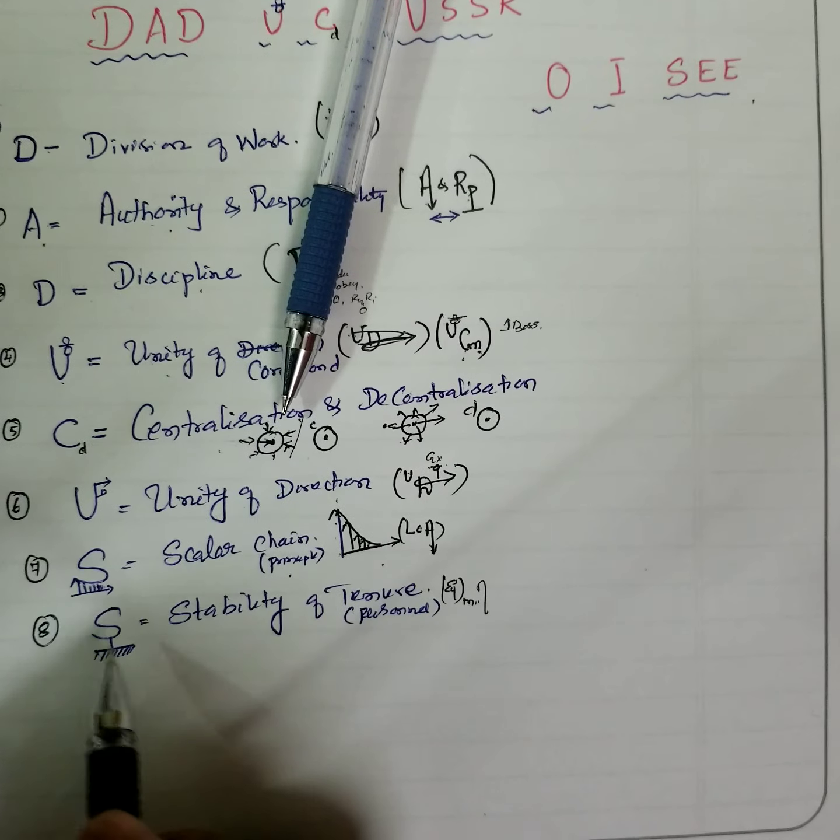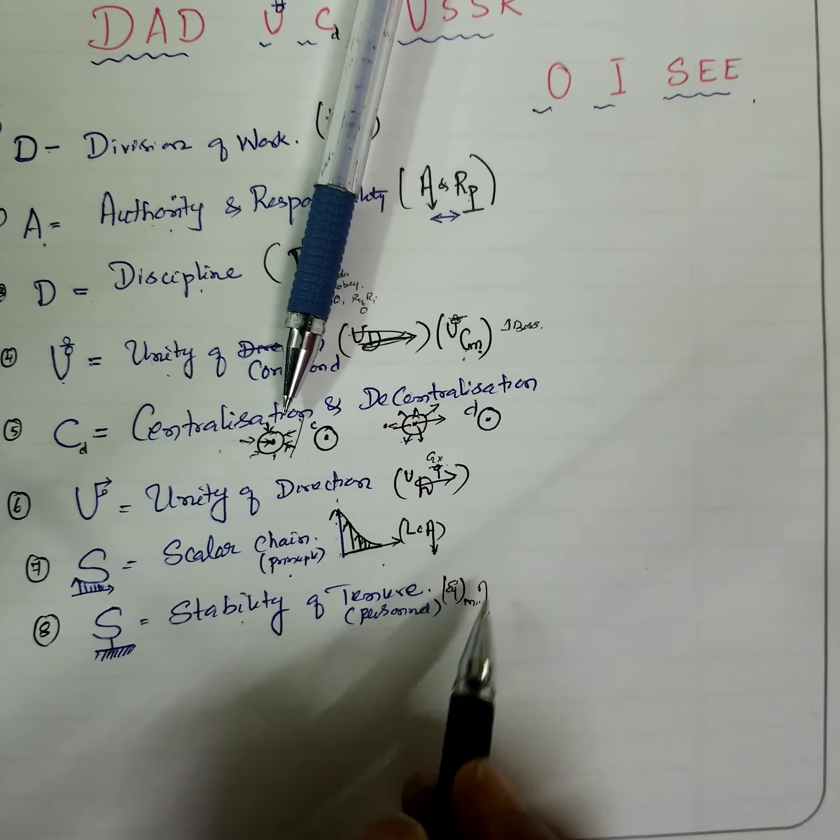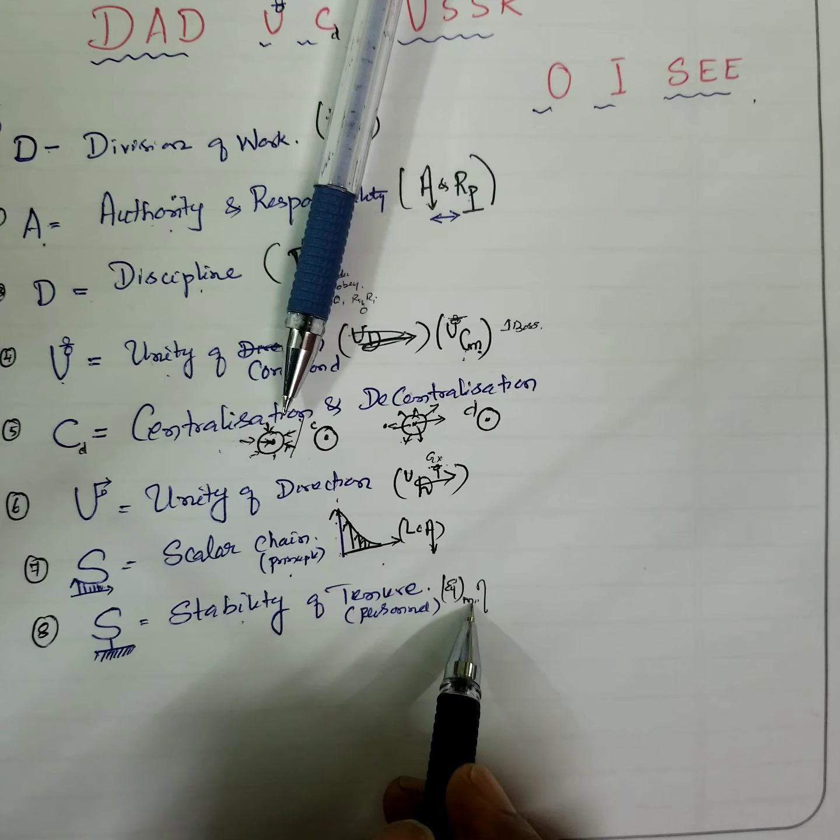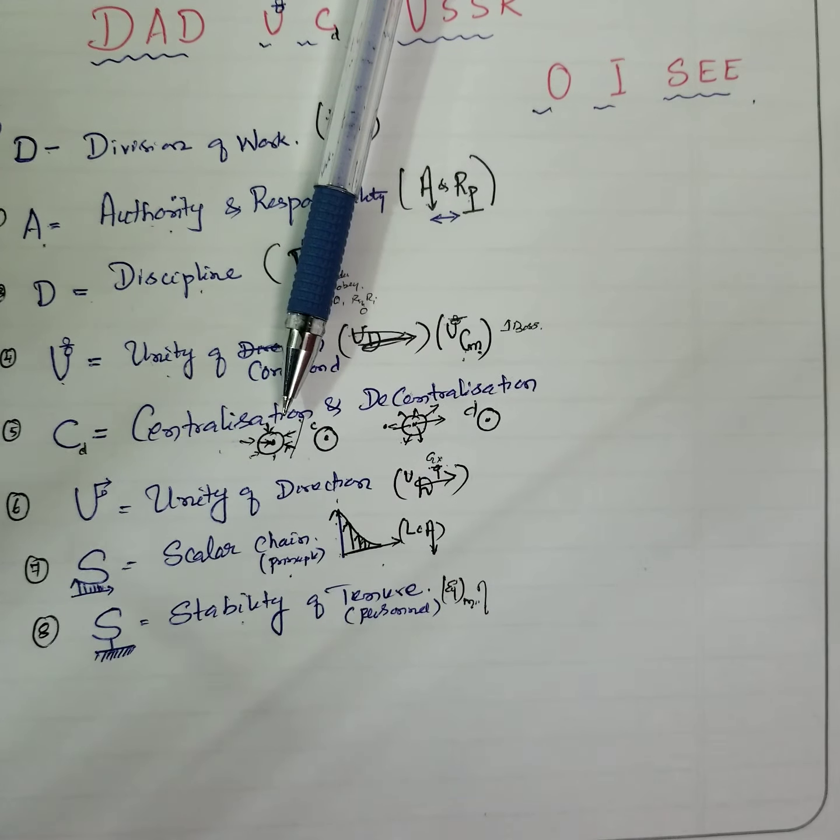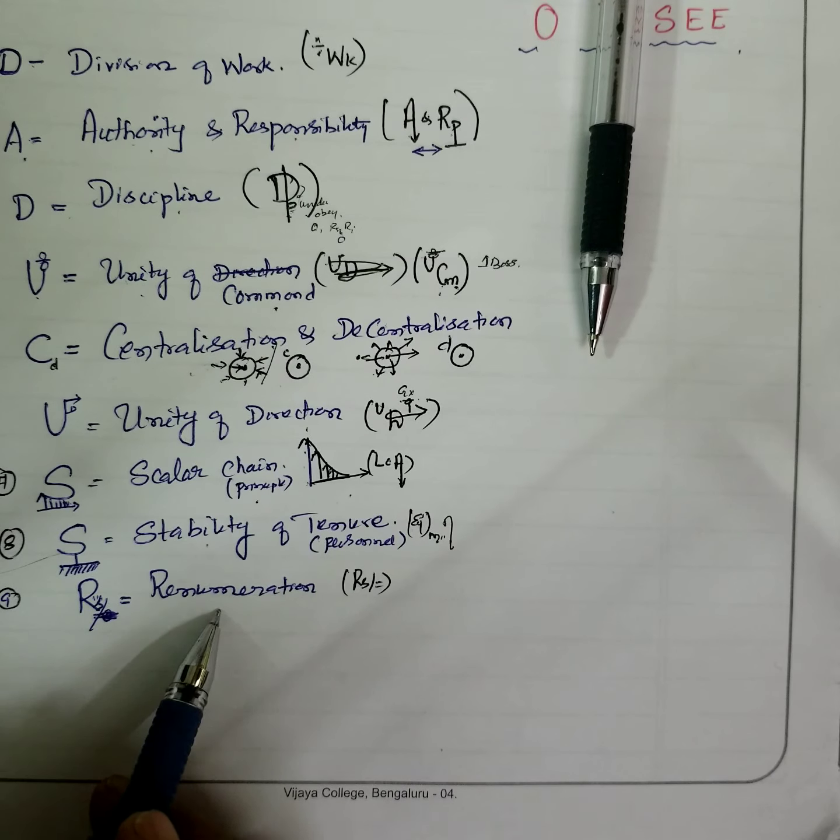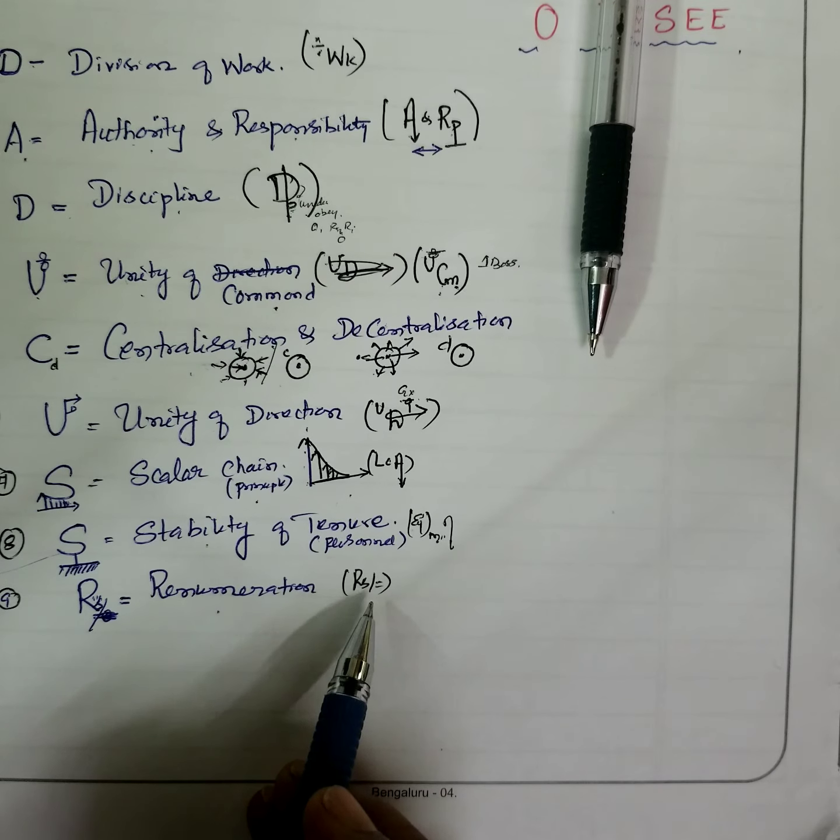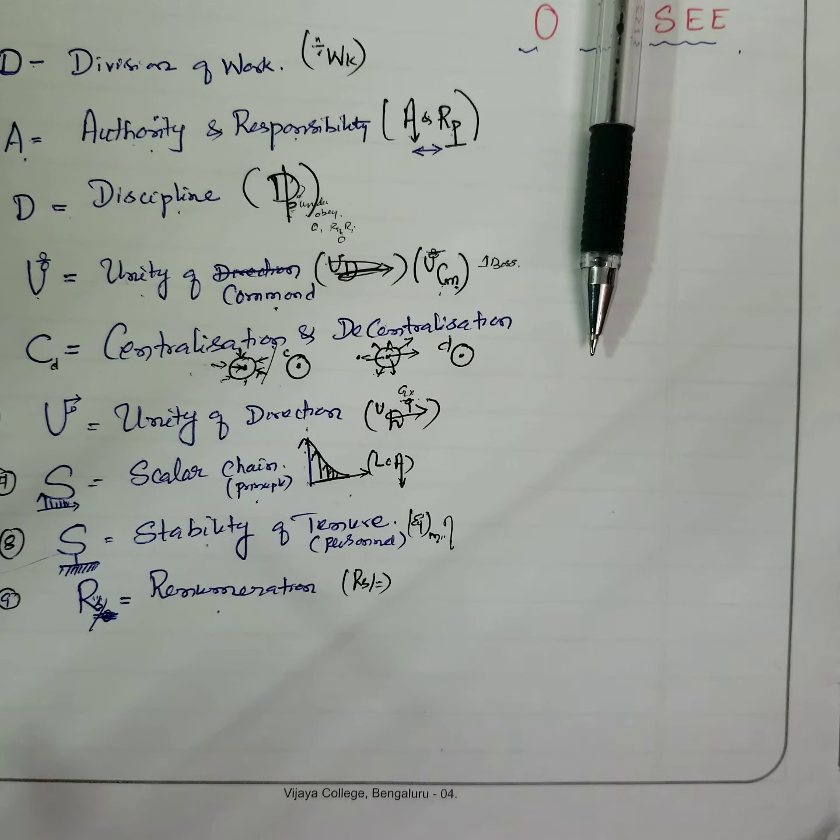What do you mean by stability? Stability of tenure of personnel means you must have minimum employees with maximum efficiency. R stands for remuneration of an employee, and it should be good and equitable which gives good relations between worker and management.